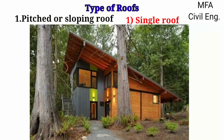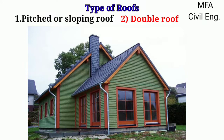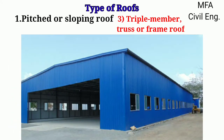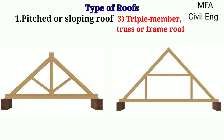Single roof consists of only common rafters which are situated at the ridge and the wall plates. In double roof, an additional member called purlins is introduced to support the common rafters at intermediate points. For long span roofs, truss types like king post roof truss and queen post roof truss are used.